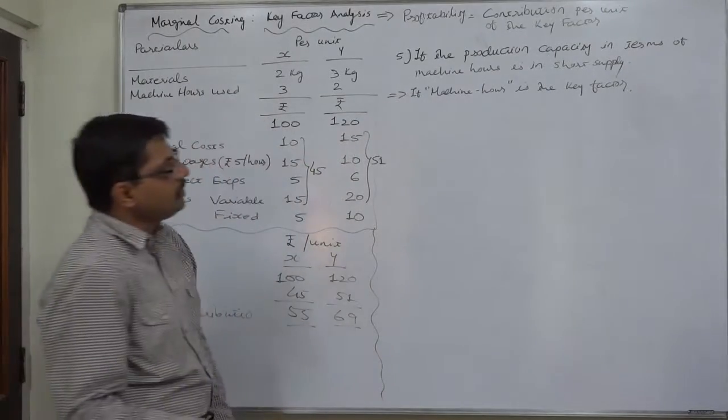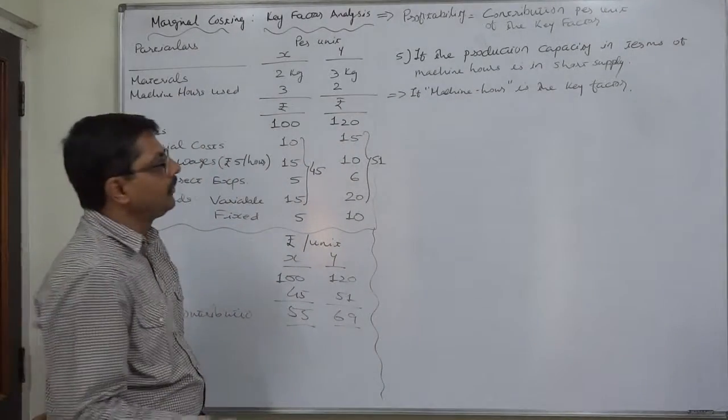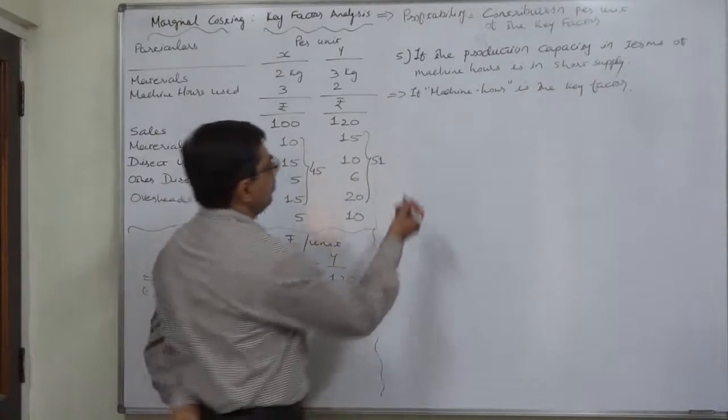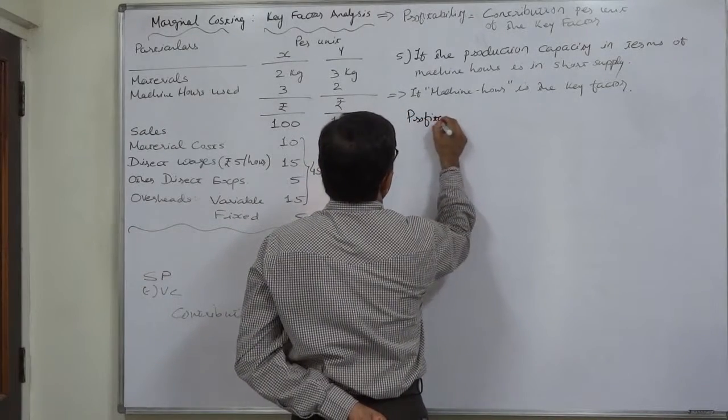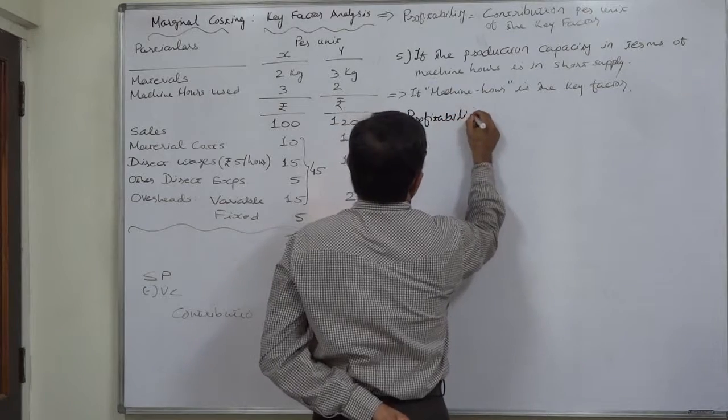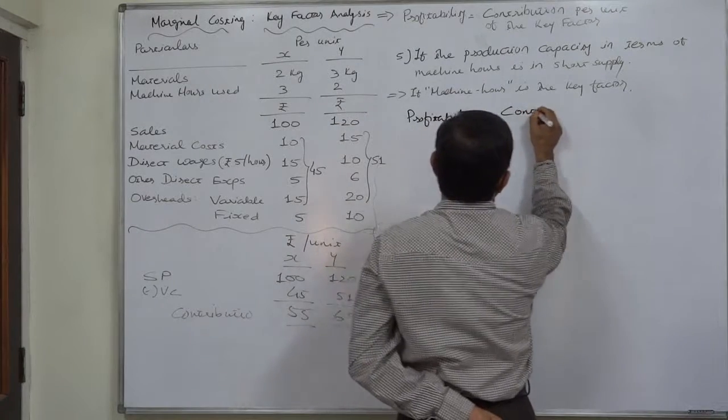When machine hour is the key factor, contribution per unit of key factor means contribution per machine hour. So the meaning of profitability will be contribution per machine hour.